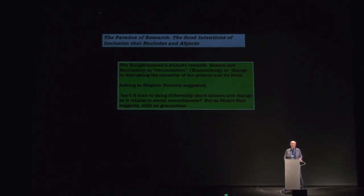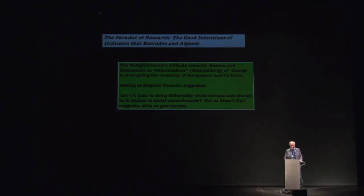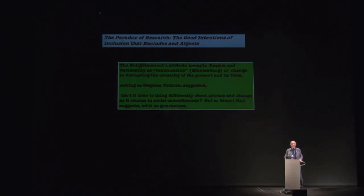My broader argument is about the Enlightenment. The Enlightenment gives focus to reason and rationality; a particular kind of common sense has developed — doxa — that loses sight of other elements of the Enlightenment. Blumenberg talked about an important element of the Enlightenment as renunciation: disrupting the causality of the present and its doxa. That's an important part of science — which has been valuable in post-colonial studies and post-humanism in challenging received notions of what the Enlightenment was.